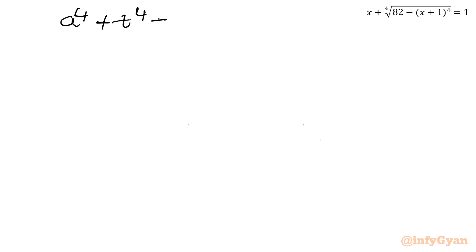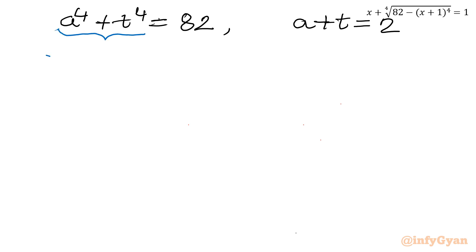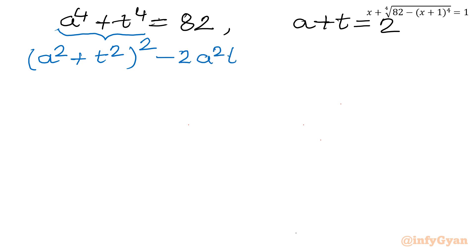Let's solve this system: A^4 plus T^4 equal to 82, and A plus T equal to 2. Now I will use algebraic identities. I can write A^4 plus T^4 as (A² + T²)² minus 2A²T², and further expand (A²+T²) as (A+T)² minus 2AT.